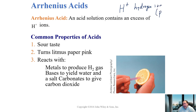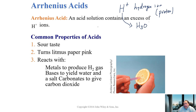H+ is also sometimes referred to as a proton in acid-base chemistry. Hydrogen has one proton, one electron, and no neutrons. For it to become positively charged it must lose its electron, leaving only a proton. We'll also see the formula H3O+, known as the hydronium ion, which is essentially the same thing as H+ in acid-base chemistry.